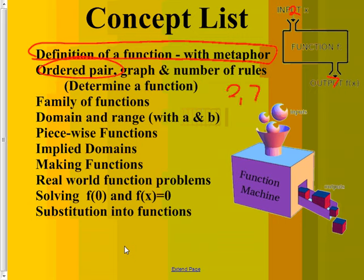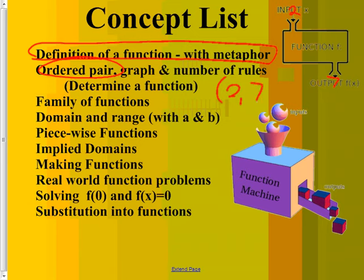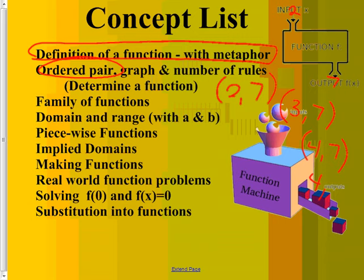There are a couple other ways you can tell if something is a function from ordered pairs. If I say (2,7) and (2,6), right there I've already broken the rules because one input had two different outputs. One thing that confuses people is if you get the same output for different inputs - like 2 gives 7, and 3 gives 7, and 4 gives 7. People feel like that's not a function, but it is - it hasn't broken a rule.